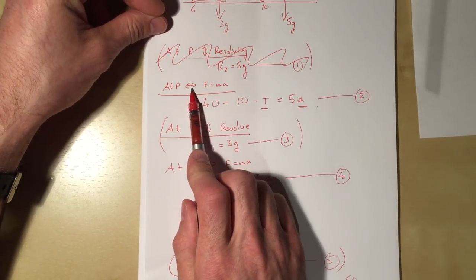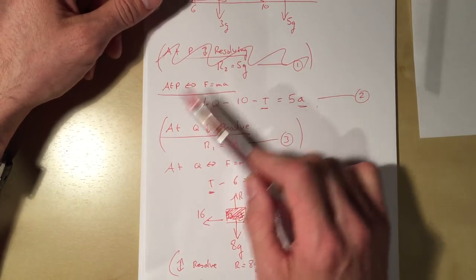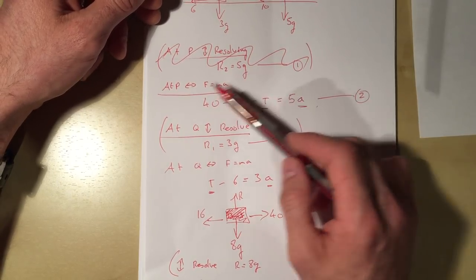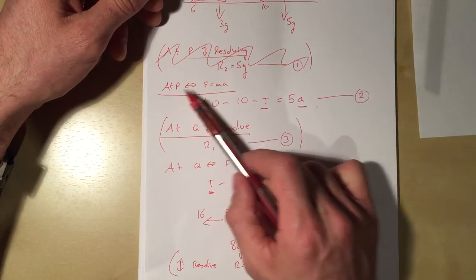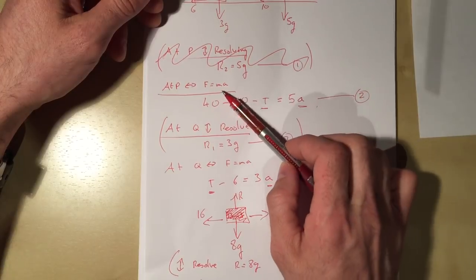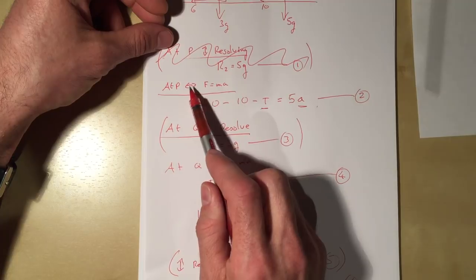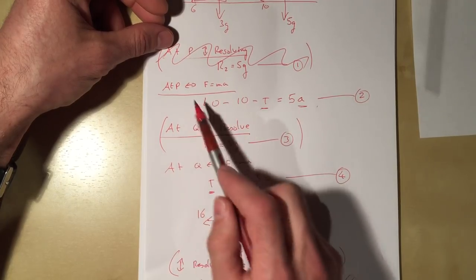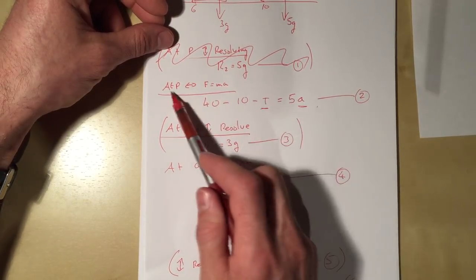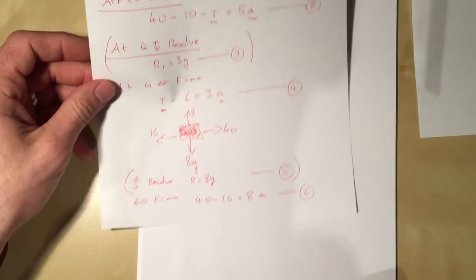You need to tell the examiner you're working horizontally not vertically, and that you're applying F=ma rather than resolving. That label is super important. You can use shorthands like 'at P, working horizontally, apply F=ma' - that's perfectly fine in an exam. Label your equations and be clear when you move on.